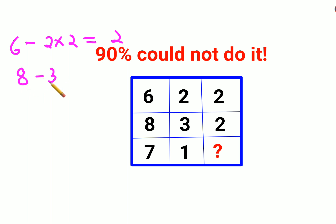Similarly, 8 minus 3 into 2 that gets you 2. So basically what you are doing is you are subtracting the double of the second number from the first number.